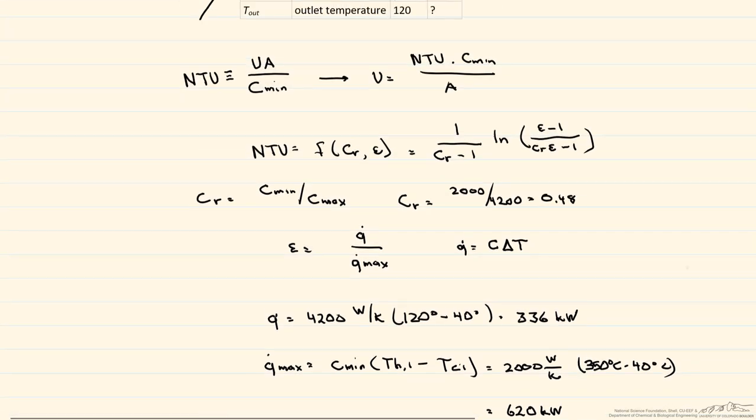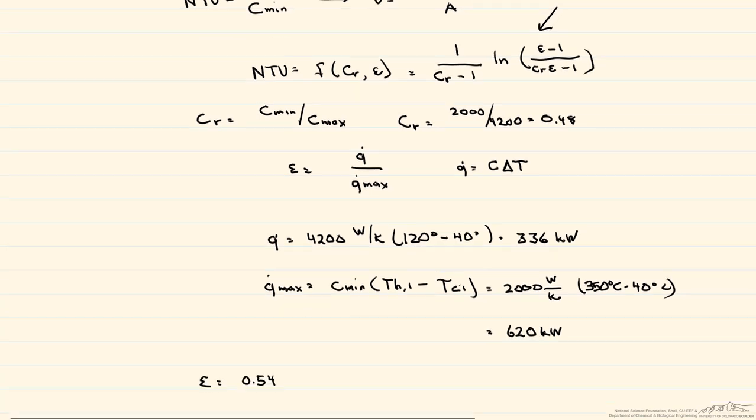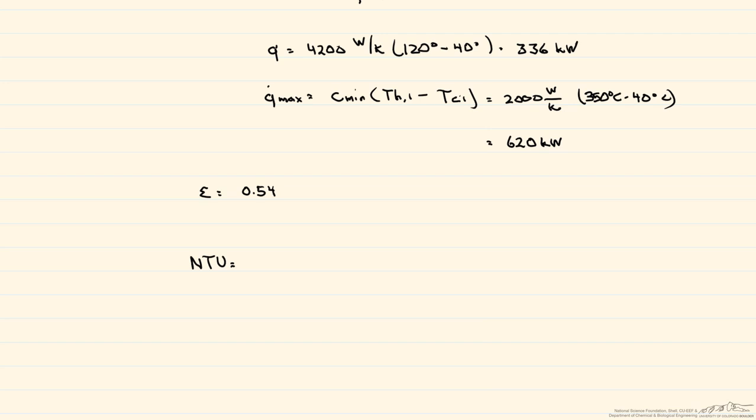So that's equal to 1 divided by our 0.48 minus 1, and the whole thing is multiplied by the natural log of 0.54 minus 1 divided by 0.54 times 0.48 minus 1. And when we calculate this out, we find that the NTU is equal to 0.91.